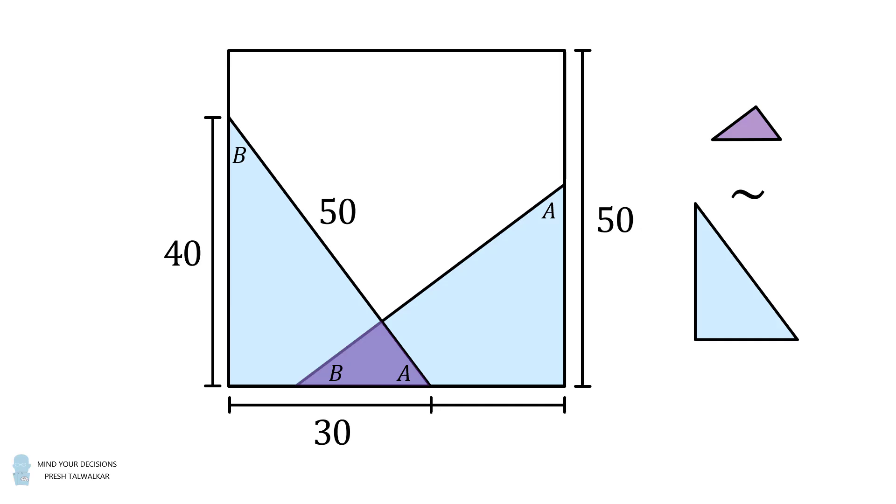Now this distance here will be equal to 50 minus 30, which is equal to 20. Then the longer leg of this right triangle is equal to 40. So this distance, which is the hypotenuse of the purple triangle, is also equal to 20. Then the remaining length here will be equal to 10.